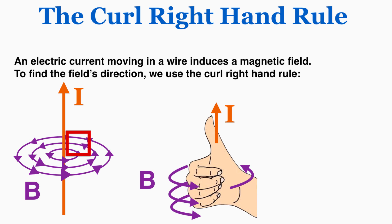When the current induces a magnetic field, the magnetic field exists in a circle around that current. To find the direction of that circular magnetic field, if we hold up our right hand in that curl symbol and say that the thumb points in the direction of the current, then the magnetic field is going to curl around in the direction that our hand is curling.